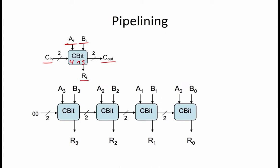It is constructed using four C-bit modules as shown here. The first question we want to consider is what are the propagation delay and throughput of this combinational circuit? The propagation delay of a combinational circuit is the propagation delay along its longest path from input to output. In this case, the longest path is through four C-bit modules. Since each C-bit module has a propagation delay of 4 nanoseconds, the propagation delay of this combinational circuit is 4 times 4 nanoseconds, which equals 16 nanoseconds.